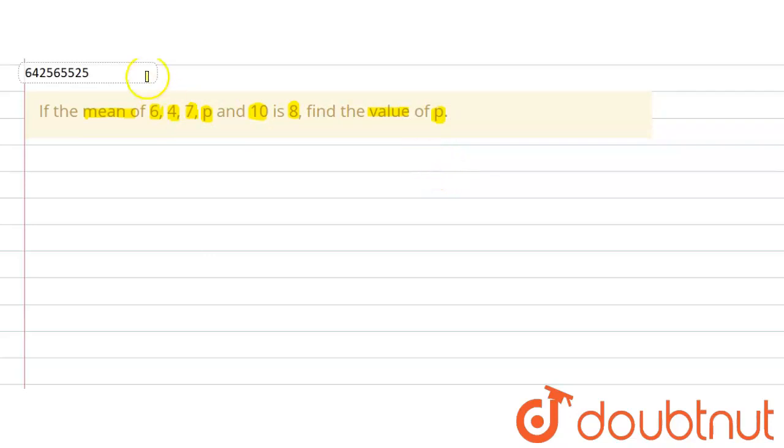Now, let's write down because we can observe that the number of observation which we denote by n is 5 in this case. So, the formula that we are here going to use is, mean is equals to sum of the observations divided by number of observations.